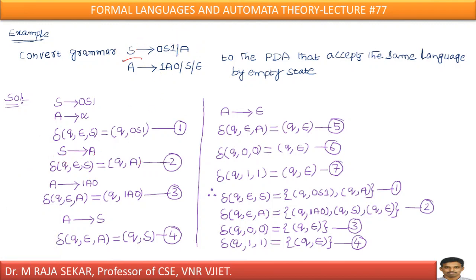Next, capital A goes to 1A0. This can be compared with capital A goes to alpha. According to rule 1: delta of (Q, epsilon, A) = (Q, 1A0).